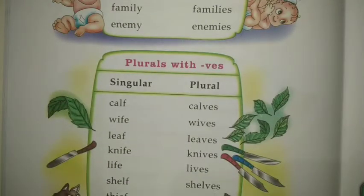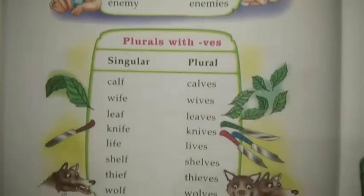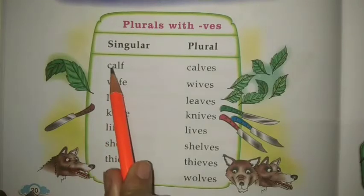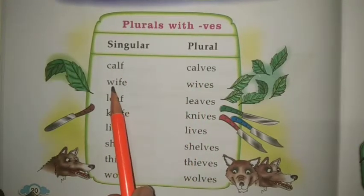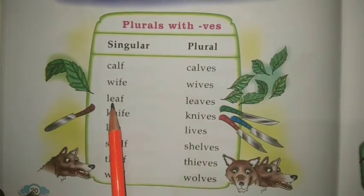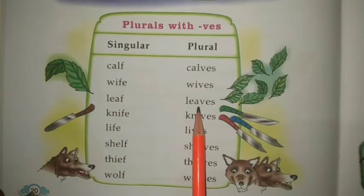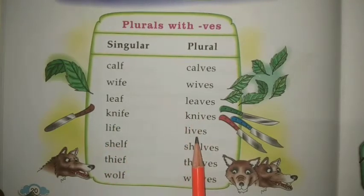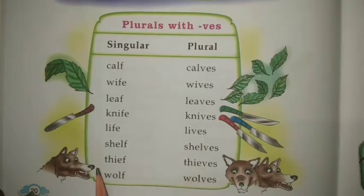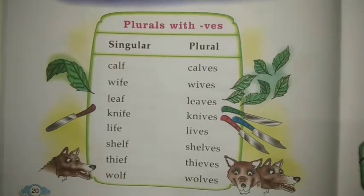Plural with VES. Words ending in F or FE change to VES: calf → calves, wife → wives, leaf → leaves, knife → knives, life → lives, shelf → shelves, thief → thieves, and wolf → wolves.